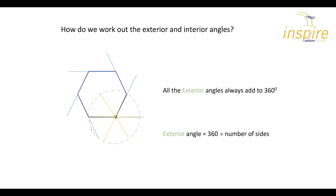Let's have a look at the hexagon again and the exterior angles we had. So the exterior angles are here — that one, that one, that one, that one, that one, and finally that one. Notice we have six exterior angles: one, two, three, four, five, six.